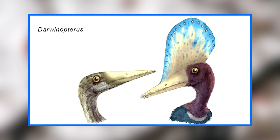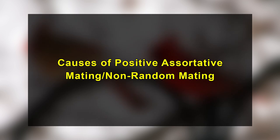A majority of the phenotypes subject to assortative mating are body size, visual signs such as color, pattern, and hairstyle, and sexually selected traits such as crest size. Let's now discuss the causes of positive assortative mating, that is non-random mating.